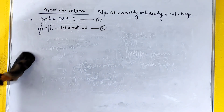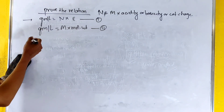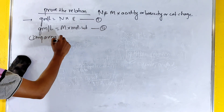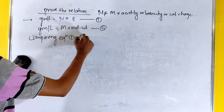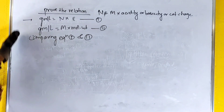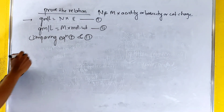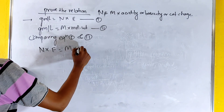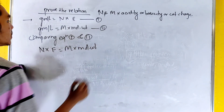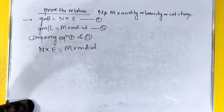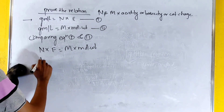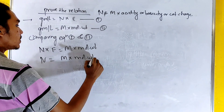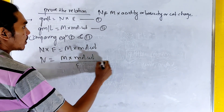Comparing equation 1 and equation 2, we get gram per liter equals normality into equivalent weight, and also gram per liter equals molarity into molecular weight. Therefore, normality equals molarity into molecular weight divided by equivalent weight.